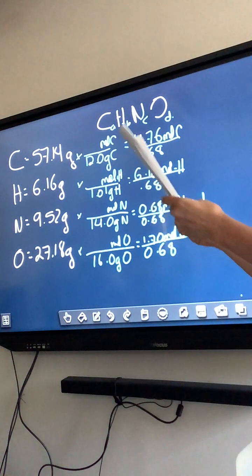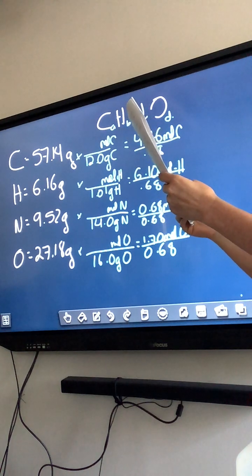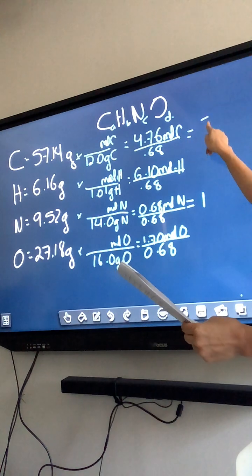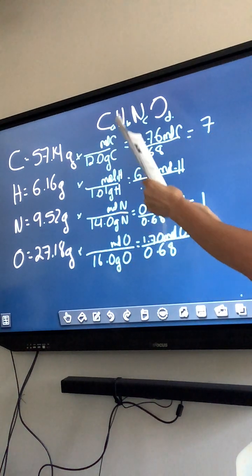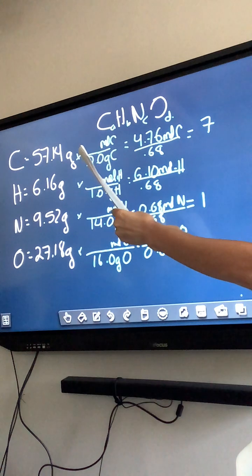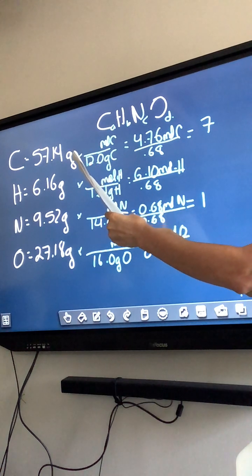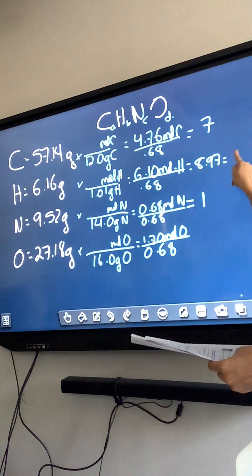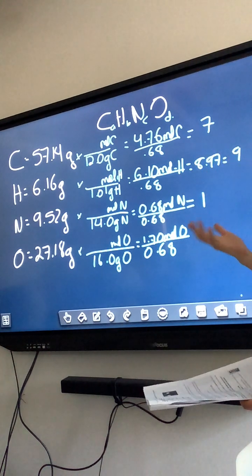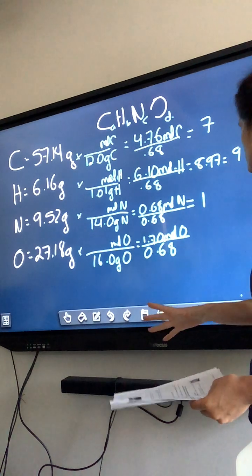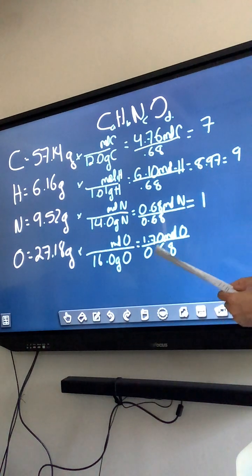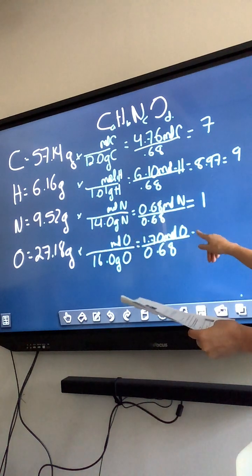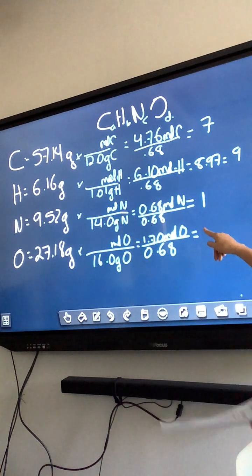We divide them all by the smallest number, which makes nitrogen 1. For the other ones, I'm getting 7 for carbon. And I get 8.97, which in this case is pretty much 9. You don't have to get 100%. That's way too close to 9. And then, this one, I'm getting 1. And this one, I'm getting 2.5.